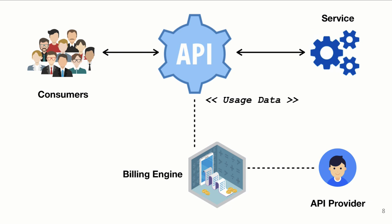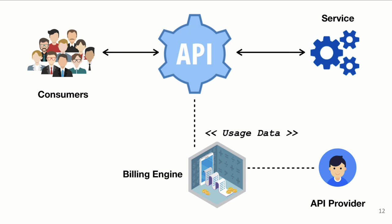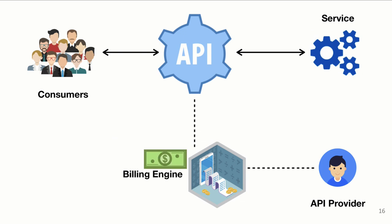In this diagram you can see that API consumers are invoking the API and they will get a response from the API call. This is the normal behavior in a typical API management use case. When APIs are monetized, another action happens.